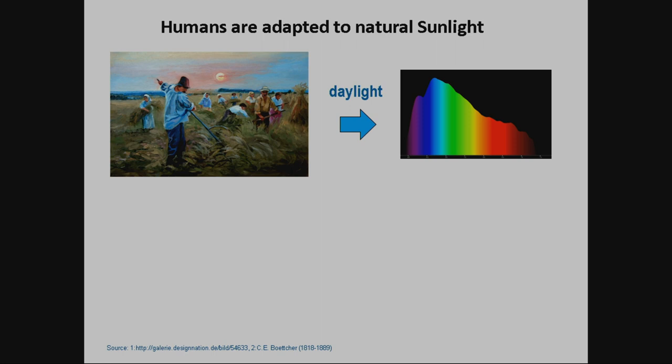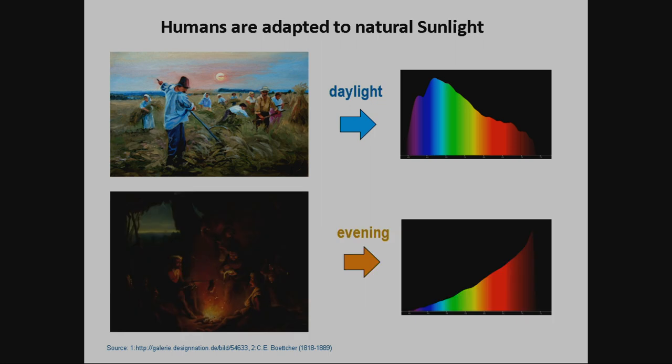Humans are adapted to natural sunlight. We have daylight, and here is the technical thing — that's a spectrum. As a scientist, I measure it, I put numbers on it. It has nothing to do with the information in it; it's just the spectrum. But the spectrum gives information about the quantity and quality of light. In the evening, we just have campfires, or we had campfires in those days — a much different spectrum from daylight.